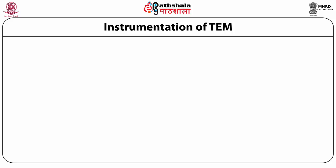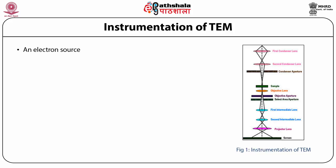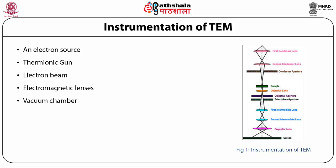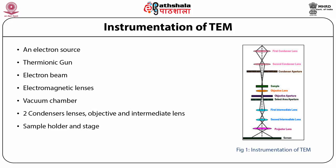This figure shows the instrumentation of TEM where there is a source of electrons — an electron gun based on thermionic emission — a beam of electrons, electromagnetic lenses, a vacuum chamber, two condenser lenses, an objective and intermediate lens, a sample holder and stage. The imaging device is a phosphor or fluorescent screen which is interfaced with the computer.